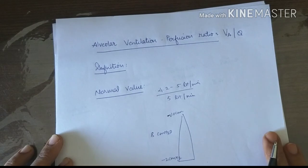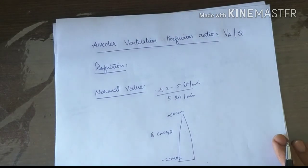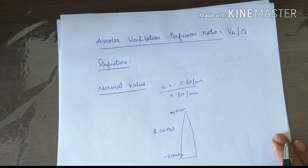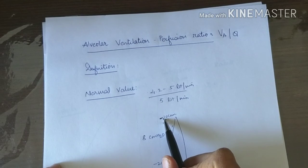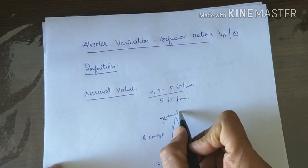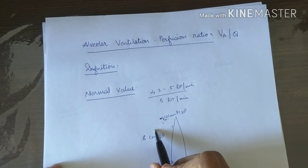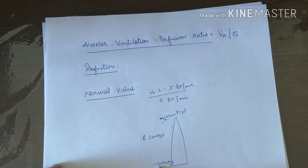Because of the change in intrapleural pressure, transpulmonary pressure is also affected, since transpulmonary pressure is the difference between intrapleural and intrapulmonary pressure. Due to more negative intrapleural pressure at the apex (minus 10 cm H₂O), the apical alveoli are larger but poorly ventilated, while basal alveoli, where intrapleural pressure is less negative, are smaller but better ventilated.